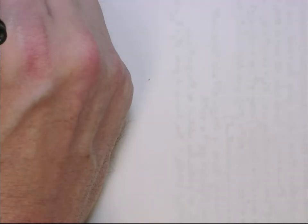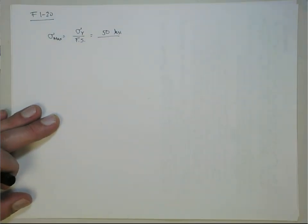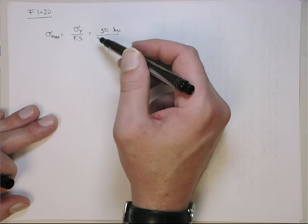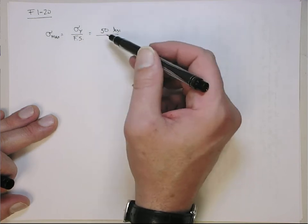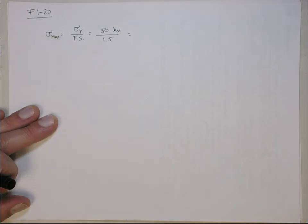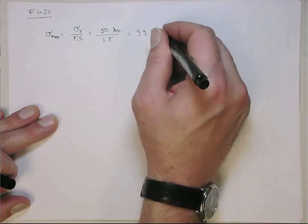So this is F120. Let's just get the max stress allowable. The maximum normal stress that's allowed is going to be yield over the factor of safety. In this case, that's going to be 50 KSI — that's 50,000 pounds per square inch — divided by 1.5. So that gives me a maximum allowable stress for the design of 33.3 KSI.